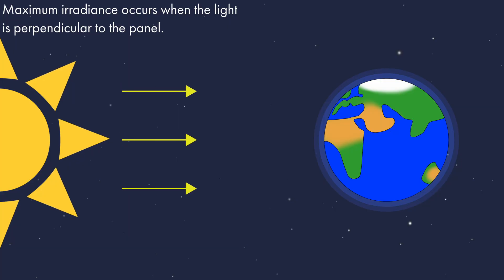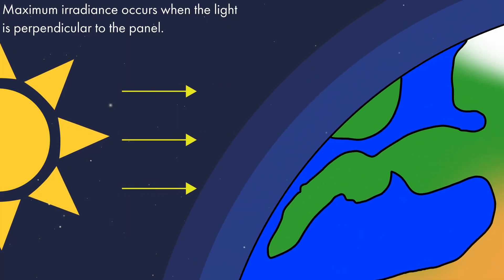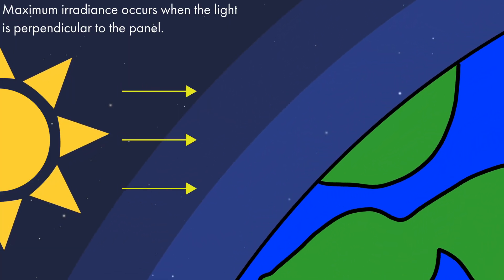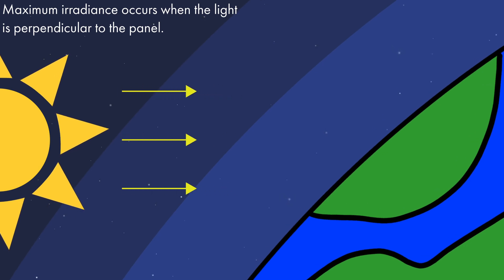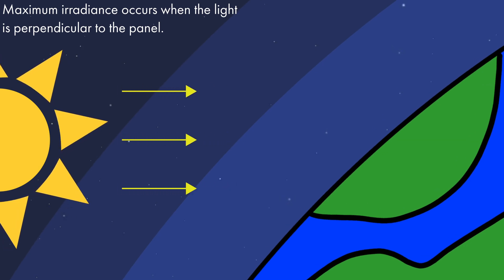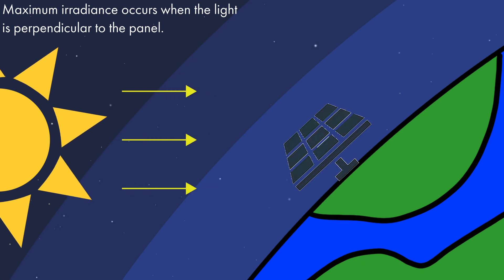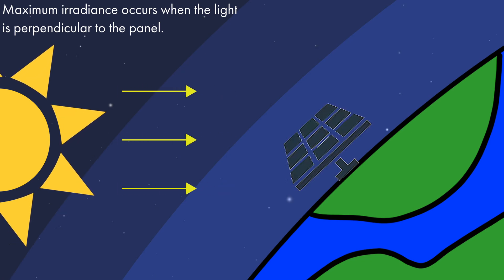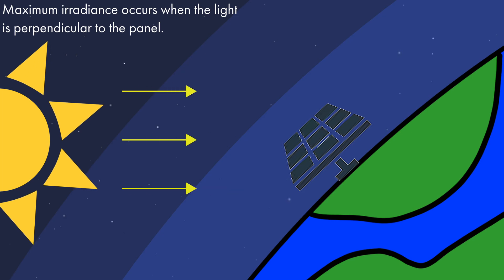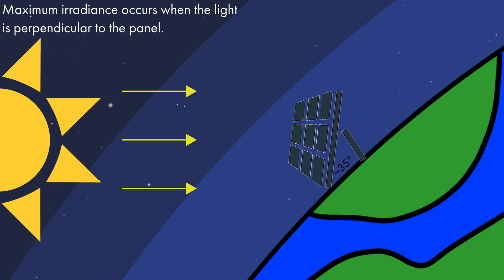In the UK, however, we're latitudinally 55 degrees north of the equator. Therefore, the light coming from the sun hits the ground at an angle — the light is more spread out over the ground. Therefore, if a panel here was angled at zero degrees, it would not receive the maximum radiation — on average, about 16% less. The optimal angle for a solar panel to receive the maximum radiation in the UK is about 30 to 40 degrees.